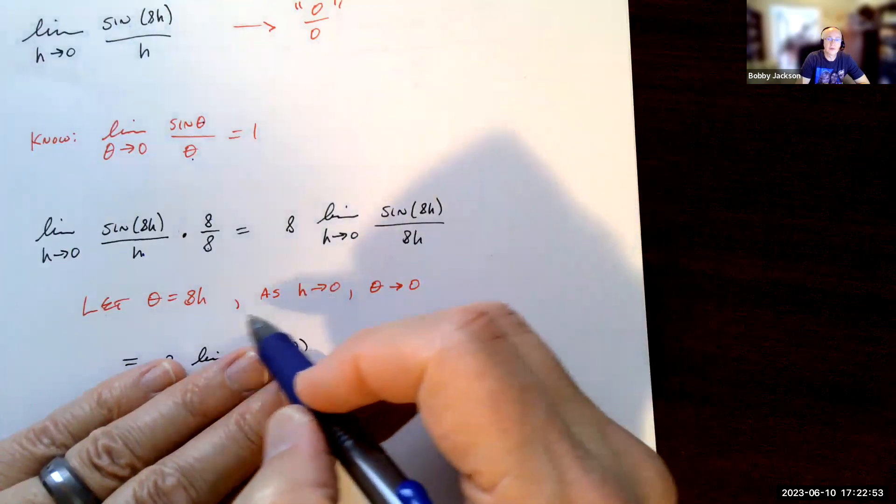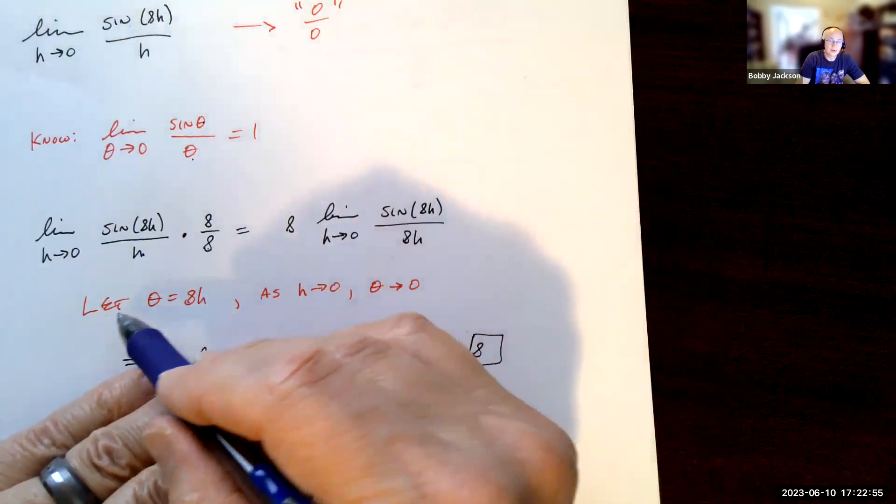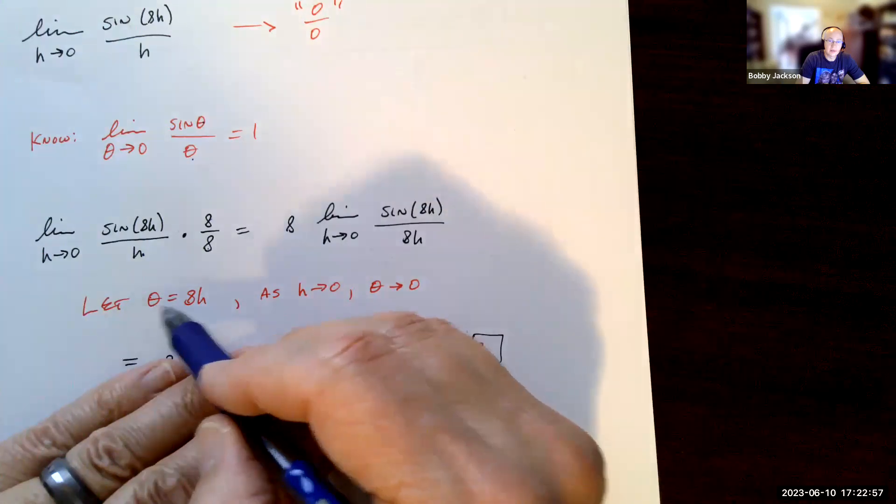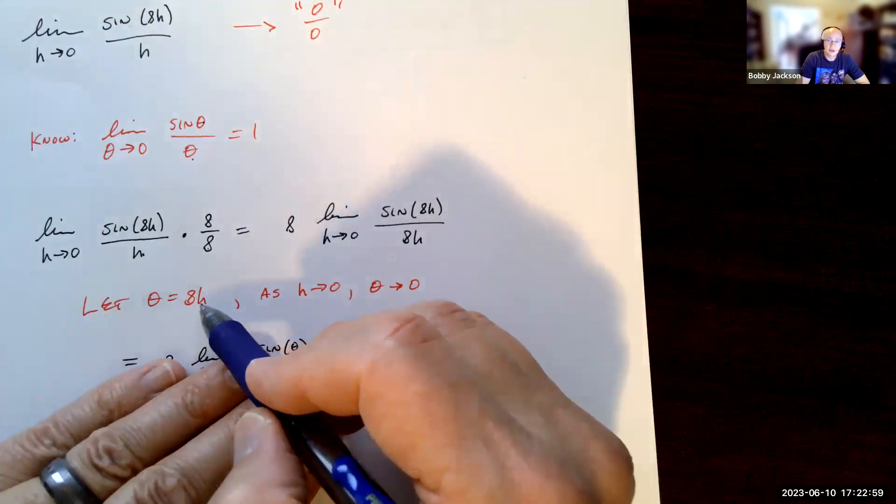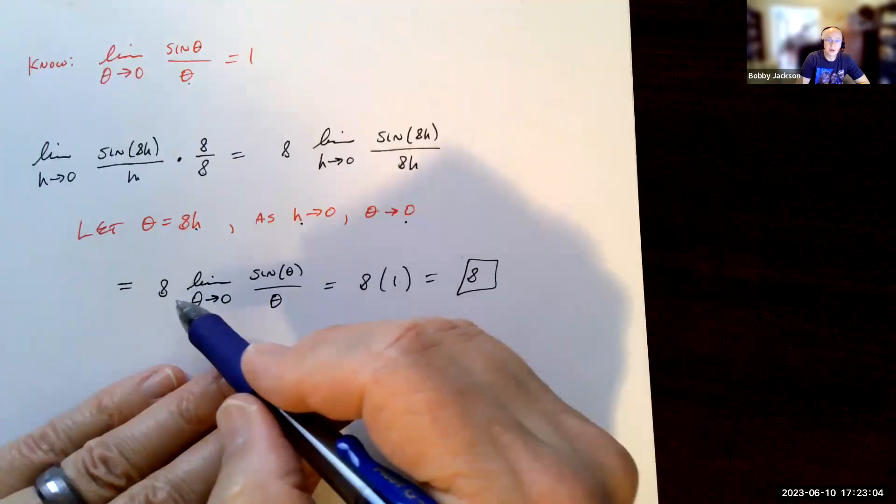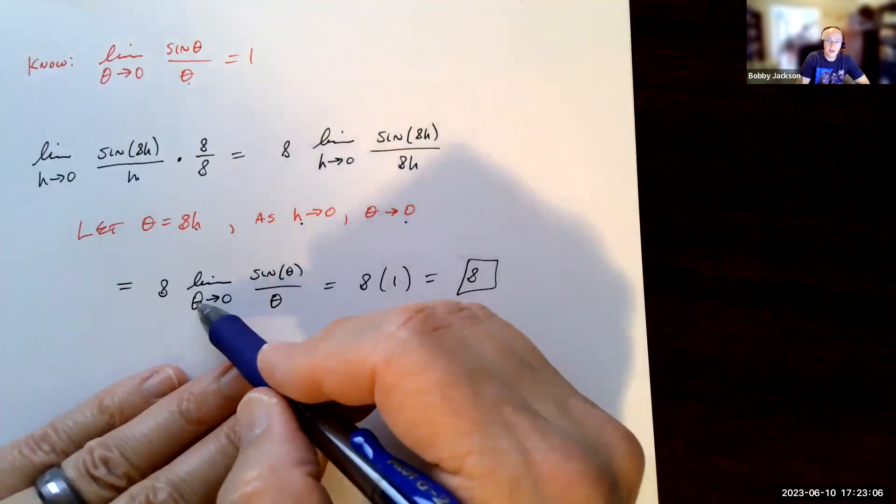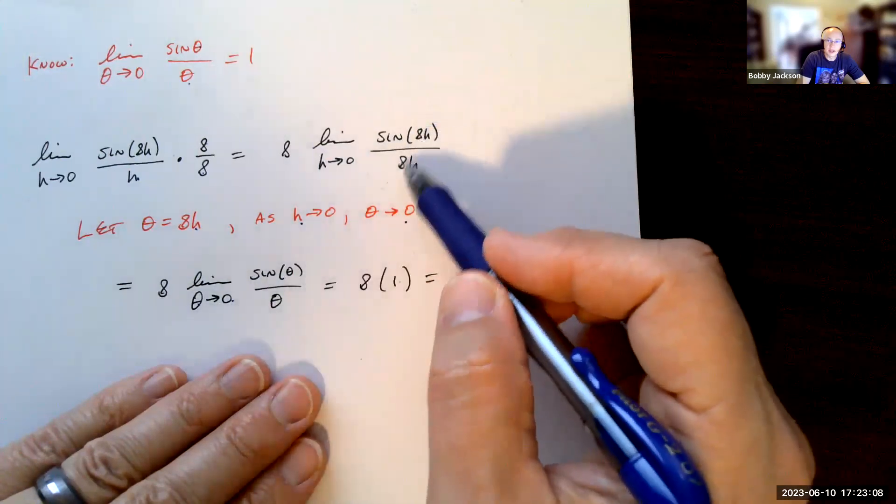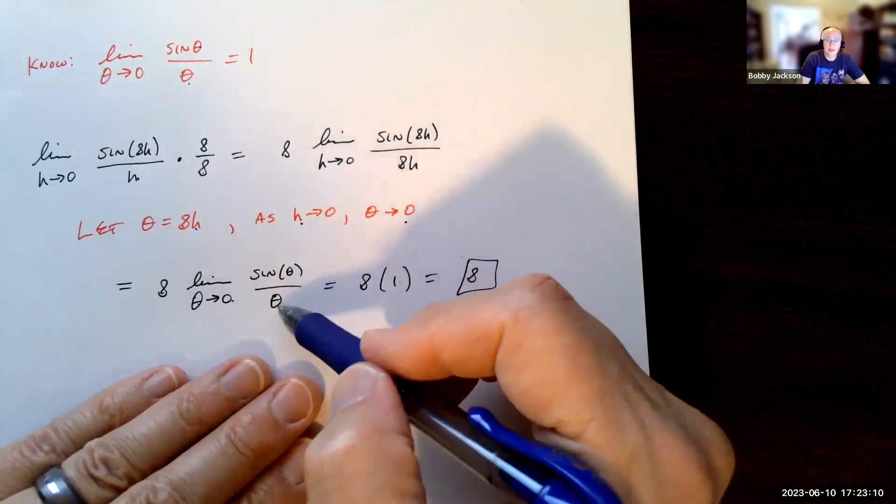And to formally show that, I can let theta be 8h, right? And so as h goes to 0, then theta is going to 0. And so this limit becomes 8 times the limit of theta going to 0, and just replacing 8h with theta, sine theta over theta.